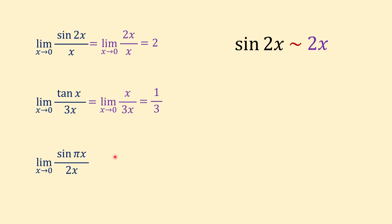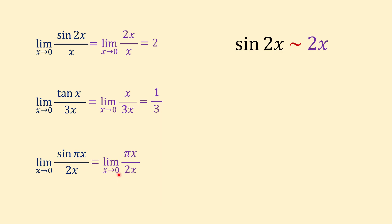Another example: limit of sine of pi x over 2x when x approaches 0. We can replace sine of pi x with pi x, so the limit becomes the limit of pi x over 2x when x approaches 0. If we cancel x from numerator and denominator, the value of the limit is pi over 2.